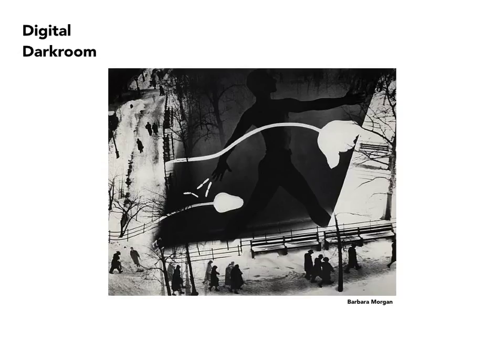Barbara Morgan was also interested in manipulation, and she had photographed a lot of dancers. Here you have an image of a dancer faintly seen in the dark section of the image, with flowers seen in silhouette and scenes of more than likely Central Park seen in snow.